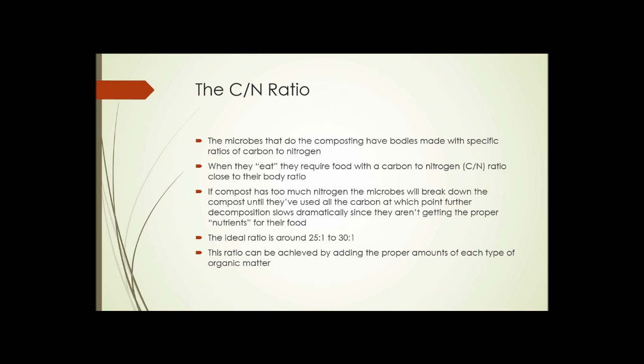If the compost has too much nitrogen, the microbes will break down the compost until they've used all the carbon, at which point further composition slows dramatically since they're not getting the carbon they need. It's mostly just nitrogen. The composting can still happen because some carbon will be supplied from the bacteria themselves dying and their bodies being used as a carbon source.